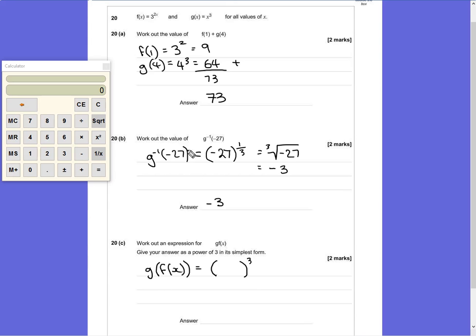And what we're given is the formula f(x), which is 3^(2x). Using our laws of indices, we know that if we multiply powers across a bracket, then we're actually just multiplying those values.